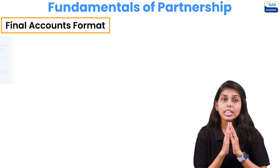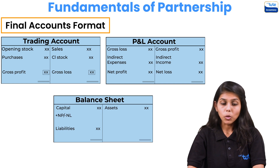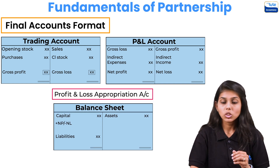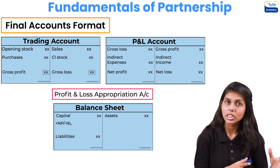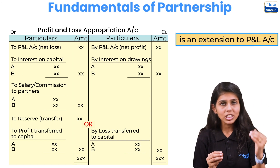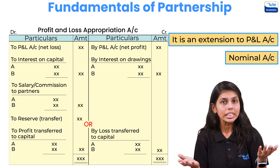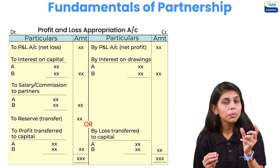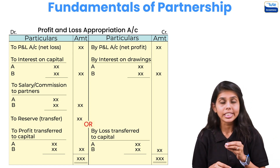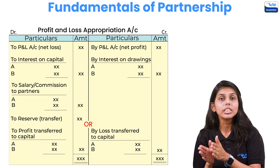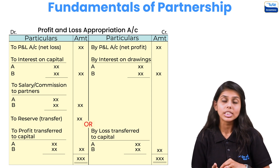In the case of a partnership firm, in addition to the trading account, profit and loss account, and balance sheet, one more account is prepared — the Profit and Loss Appropriation Account. This account is an extension of the P&L account. Like the P&L account, it is also a nominal account — debit all expenses and losses, credit all incomes and gains. Appropriation means the distribution of profit among the partners.